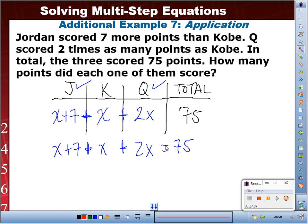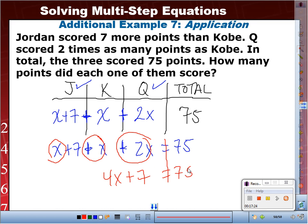Okay. I'm going to help you with the first step. I can't do anything to the right, but to the left, I can simplify. How can I simplify? By combining like terms. This becomes 4x plus 7 equals 75. From there, subtract 7. Subtract 7. We got 4x equals 68. Divide by 4. Divide by 4. X equals 17. Hold on. We haven't answered the question, though. How many points did each of them score? Who's x? Kobe. Kobe scored 17. How about Jordan? 24. 24 because it's 17 plus 7. How about Q? 34.